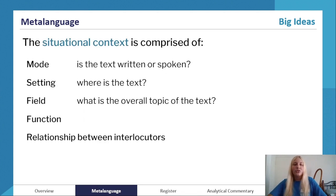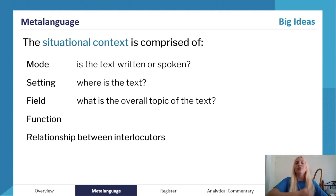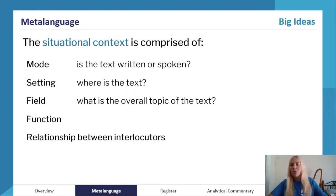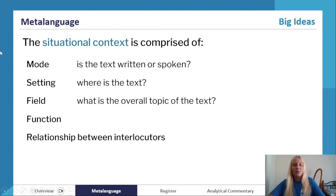Our second big idea is situational context, which is quite self-explanatory. You need to know what falls under it and be able to identify these things for every text. First, mode — whether the text is written or spoken, mentioned in one word in an analytical commentary. These situational context elements usually comprise the introduction of an analytical commentary response. For now, just understand them and be able to identify them within a text.